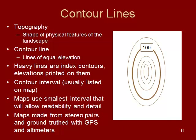Maps use the smallest interval that will allow readability and detail, so the contour interval isn't constant across all maps — it changes. All of these maps are made using stereo pairs, which are aerial photographs that overlap each other. When you look at them with special glasses, it pops out at you like a Magic Eye poster. They're then ground-truthed with GPS and altimeters on the surface.